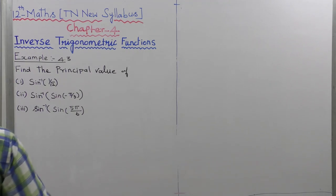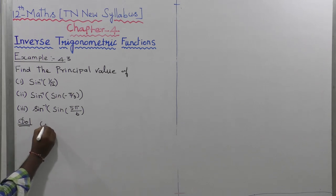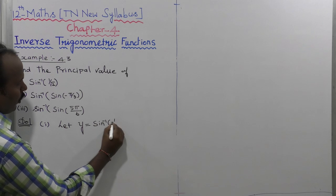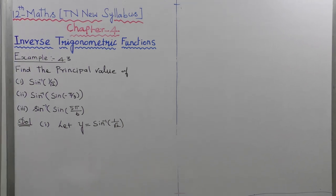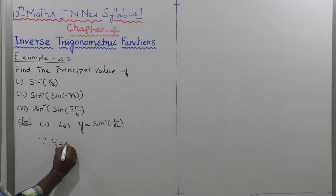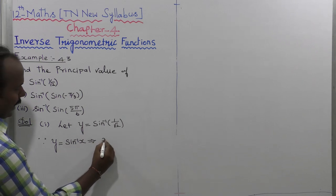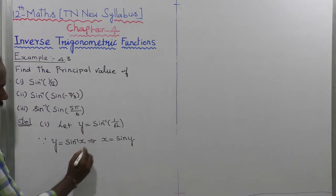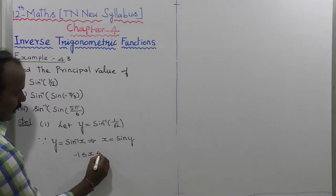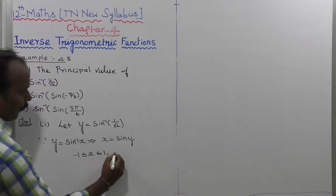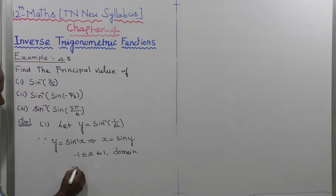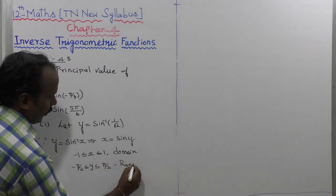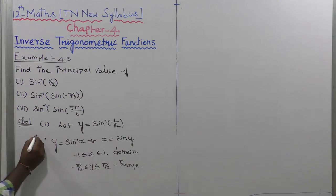For the first subdivision, let us consider the solution. We know that y equals sin inverse of x implies x equals sin y. The domain is minus 1 less than or equal to x less than or equal to 1, and the range is minus pi by 2 less than or equal to y less than or equal to pi by 2. So we have the formula.